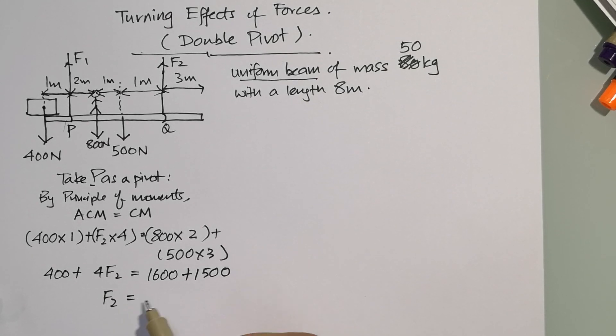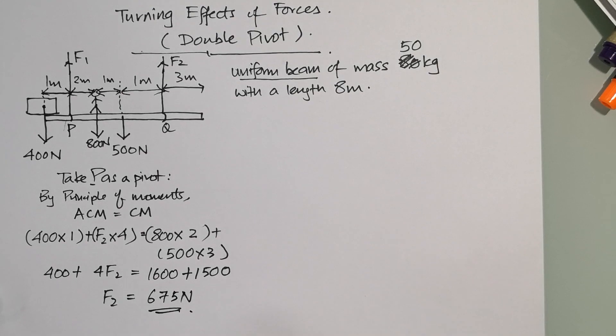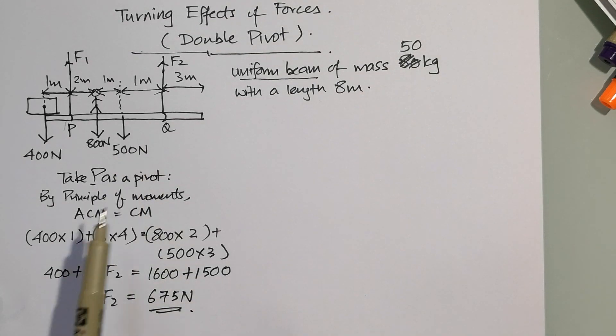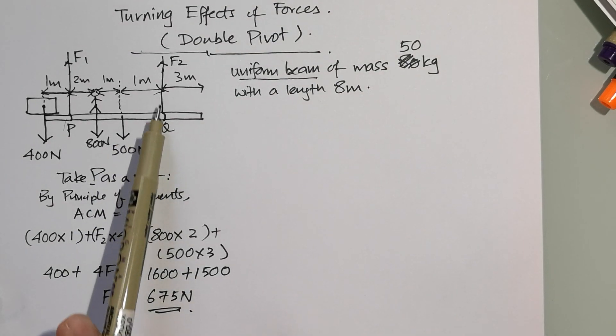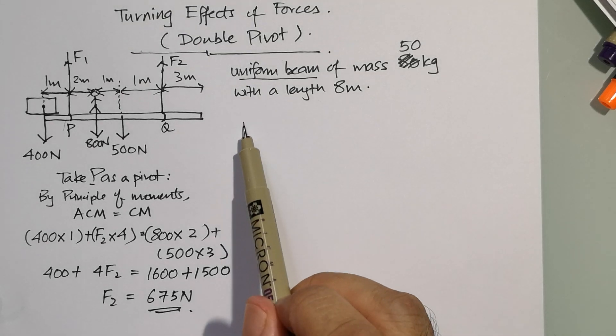And your F2 is 675 newtons. So taking P as a pivot, the force on this string F2 is 675 newtons. Let's work out the other side now.